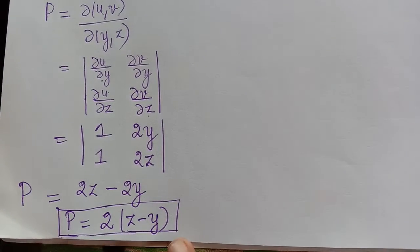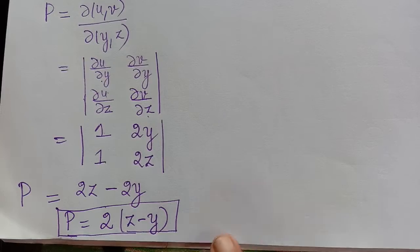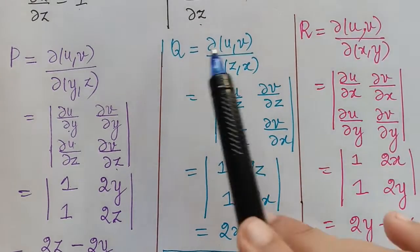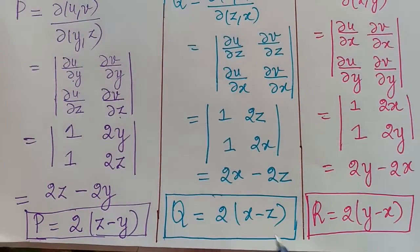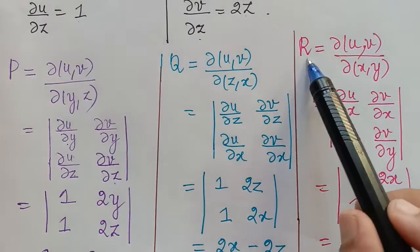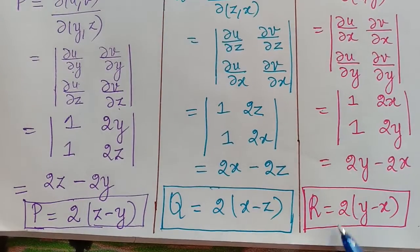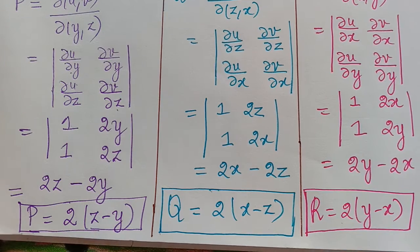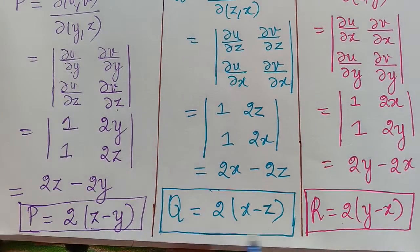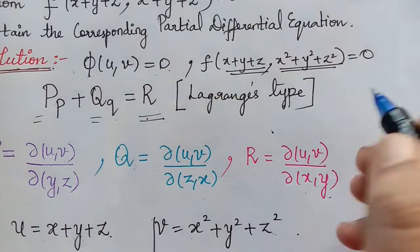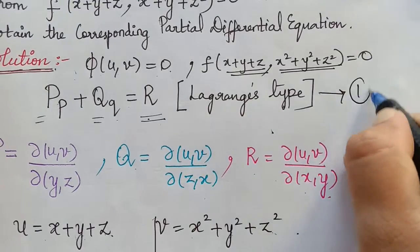In a similar way, we obtain the value of Q and R using the same procedure. The value of Q is 2(x − z) and the value of R is 2(y − x). Now that we have found all three values P, Q, and R, we can substitute them into the Lagrange's equation — let us mark that as equation 1.